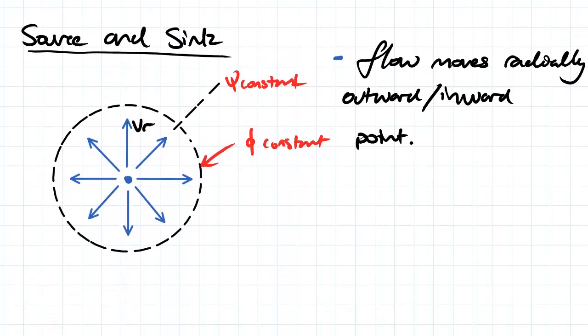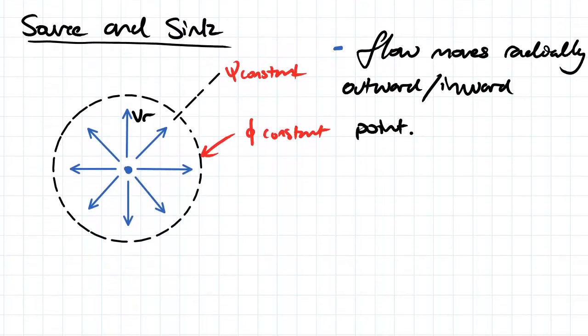When we're looking at a source and sink, essentially what that is is flow inwards or outwards radially from a point. You can see here we've got our point and we're considering a polar coordinate system.